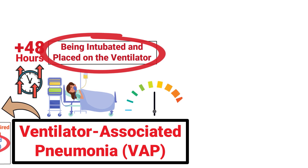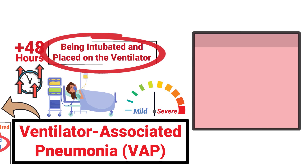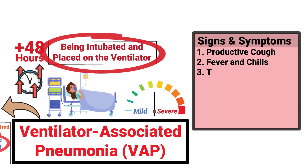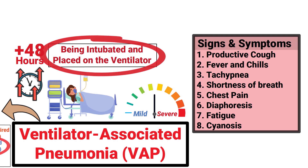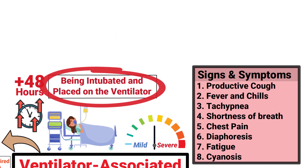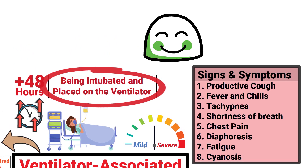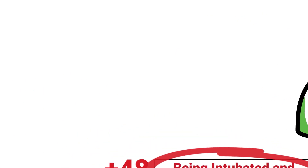A pneumonia infection can vary from mild to severe depending on the patient. Signs and symptoms to look for include a productive cough, fever and chills, tachypnea, shortness of breath, chest pain, diaphoresis, fatigue, and cyanosis. Being able to recognize these signs and symptoms is important for diagnosis, treatment, and patient outcome.